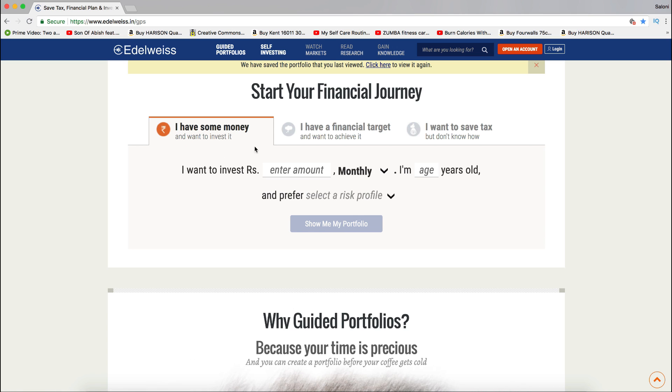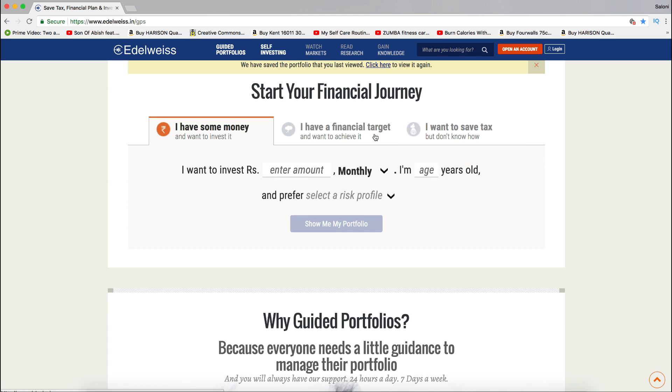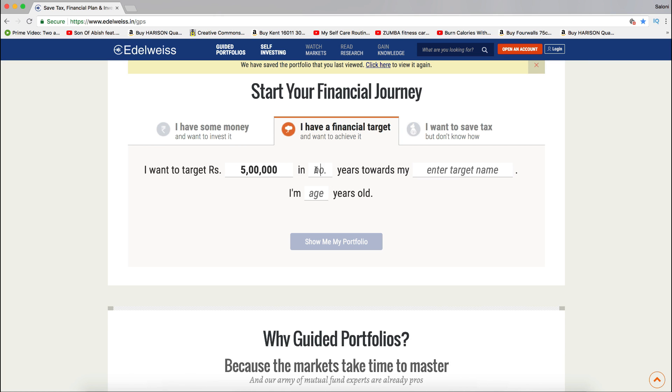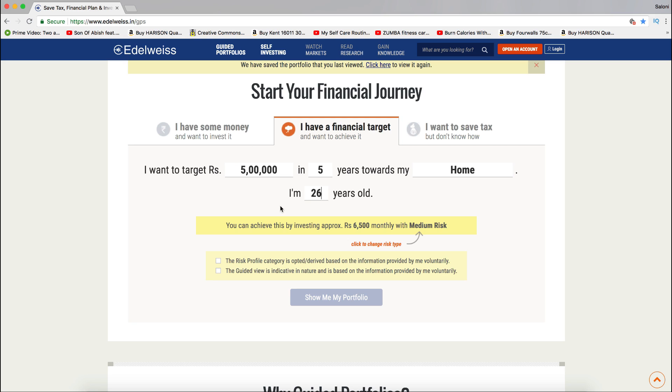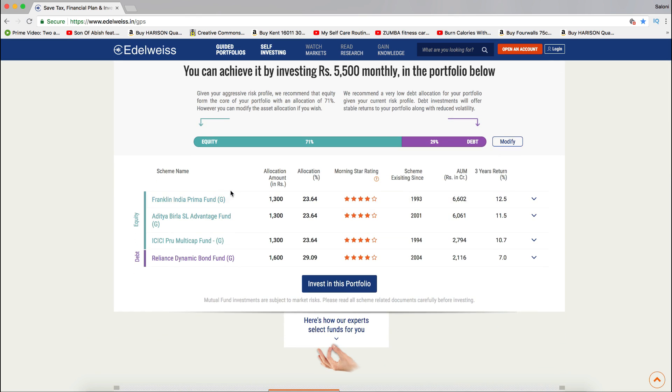So this calculator has these different targets that you can set for yourself. So when you enter the link it will ask you if you want to save money or you have a financial target. So in our case we definitely have a financial target. Let's say your target requires you to save five lakh rupees in five years towards whatever your target is. For me it was home. It will also ask you to enter your age so that it can calculate your risk profile. Once you submit your information, the calculator will automatically look at all of this data and will tell you exactly how much amount of money will you need to invest monthly to achieve your target.